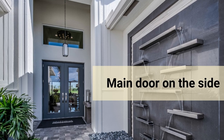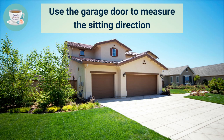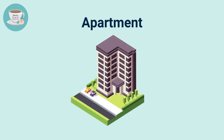There are also cases where the main door is not facing the street but is on the side of the house. If that's the case, you need to use the garage door to measure the sitting direction, because it's where active energy can get into your house. Now let's have a look at how to measure the directions of an apartment.